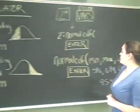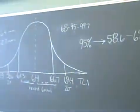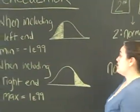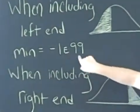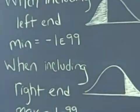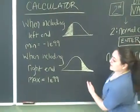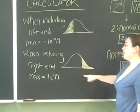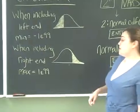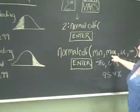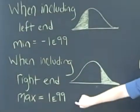Now, if we were using data where we wanted from one endpoint all the way up to, say, 58.6, then our minimum value here would be negative 1E99. E can be found by pushing 2nd comma. If we were starting at 69.4 and going to the end — anything higher than 69.4 — then our max value would be 1E99. Basically, these numbers imply infinity.